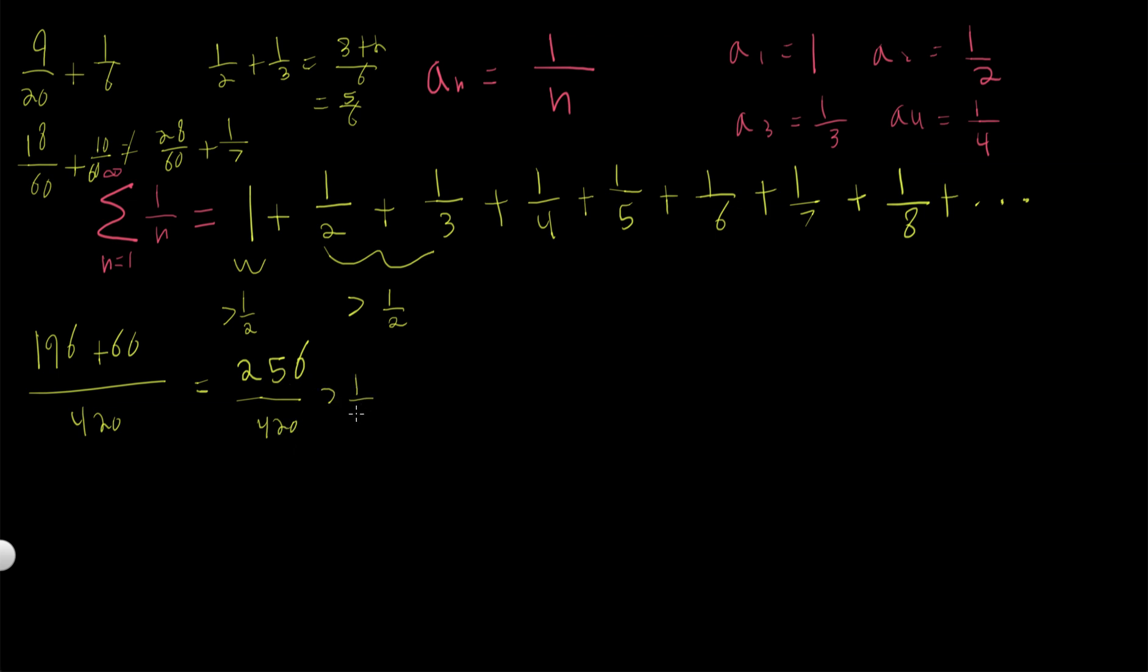So we know that 256 over 420, well, this is greater than 1 half as well. So the summation of these four greater than 1 half.